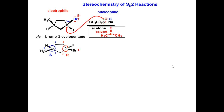Use arrows to show the flow of electrons. This shows the electrons from the sulfur forming a new sulfur-carbon sigma bond, and the electrons from the carbon-bromine sigma bond being transferred to the bromine atom.